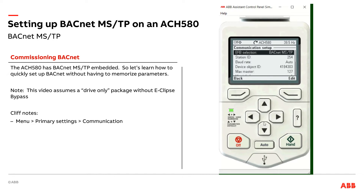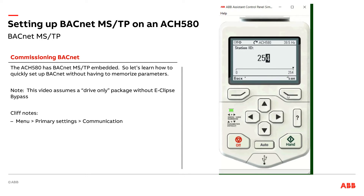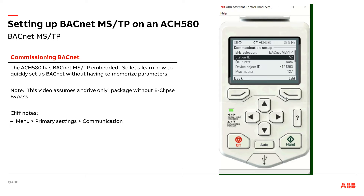What's my station ID? In my lingo, that's my MAC ID. So let's say I am MAC ID 52 — 52 sounds good. MAC IDs need to be unique on the wire, so a lot of times they end up being smaller numbers than that.